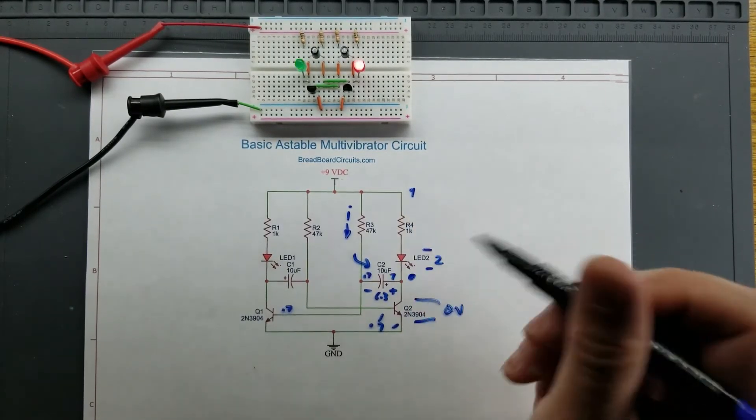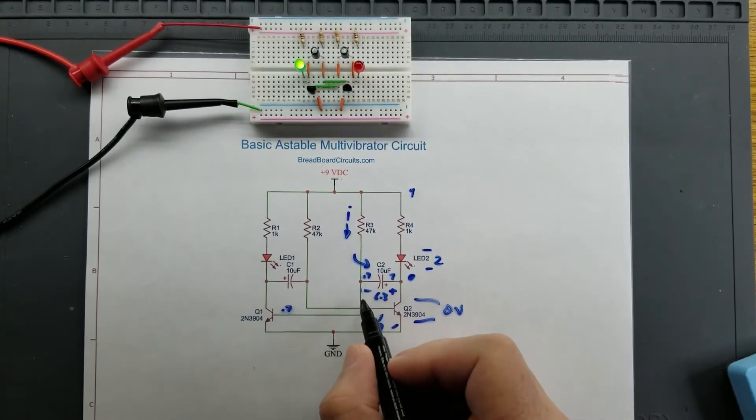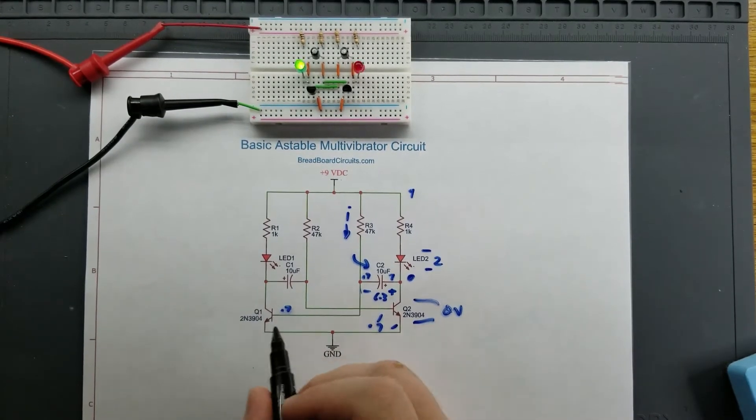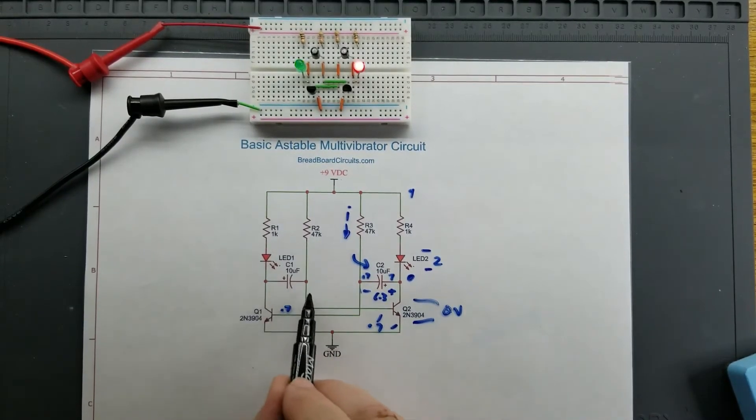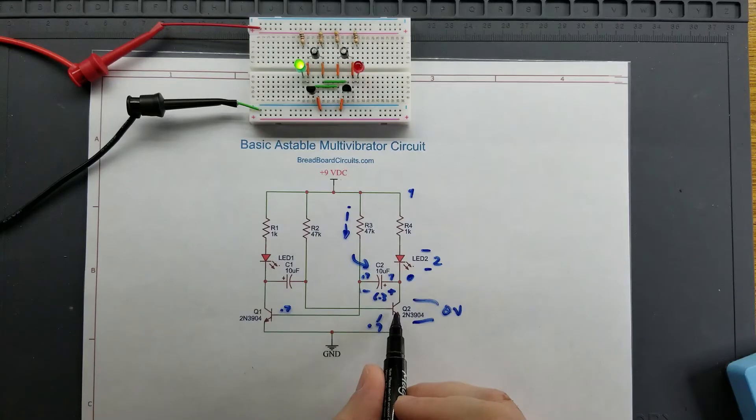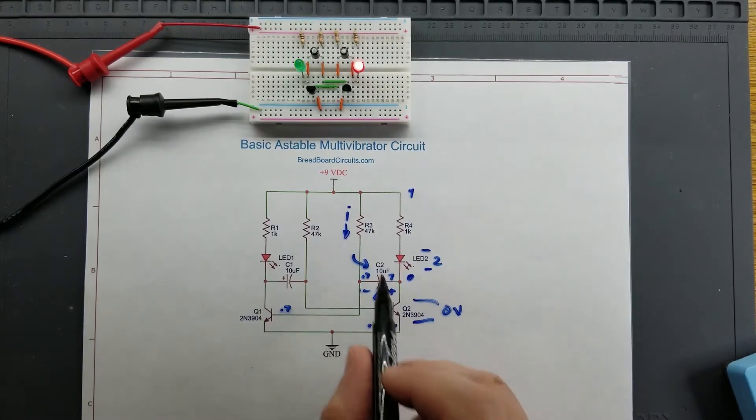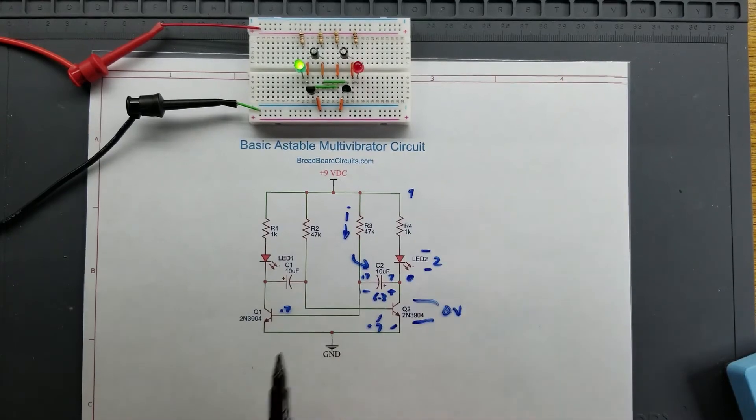It's going to reach 0.7 volts. Once that reaches 0.7 volts, this transistor will turn on. Once this transistor turns on, the same exact thing is going to happen to this transistor here. That's going to get minus 6.3 volts pushed to this transistor. It's going to turn this transistor off. And that's just going to oscillate like that forever until you turn the power off.